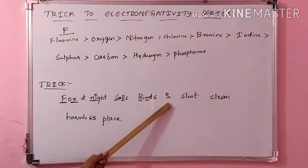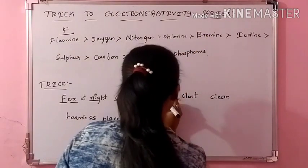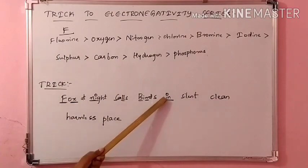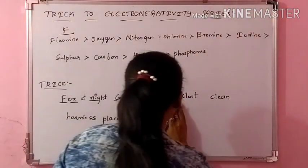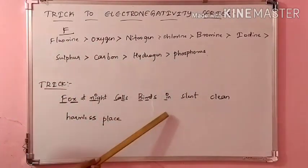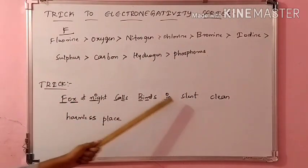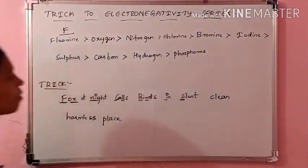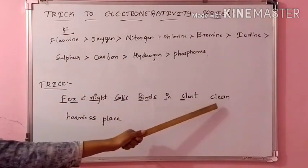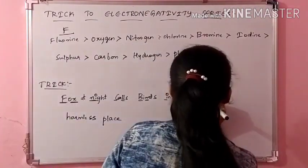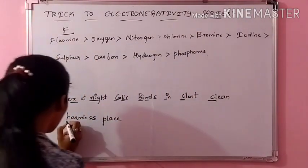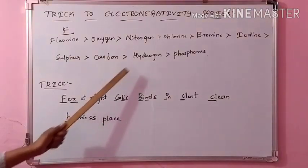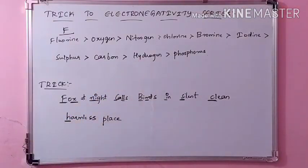Next is bromine, and next is iodine. From 'in' you take I — simply I itself indicates your iodine element. Next is 'silent' — here S you take for sulfur, so S indicates your sulfur. And next, from 'clean' you take C — C indicates your carbon. And then from 'harmless' you take H — H indicates your hydrogen. And next from 'place' what you take? Your P — that is your phosphorus.